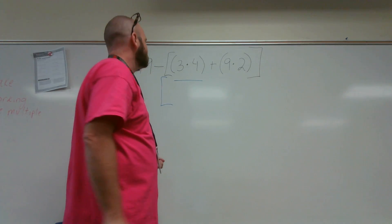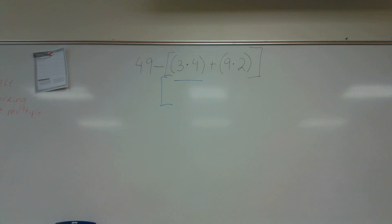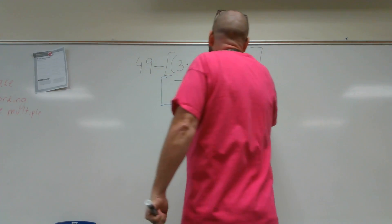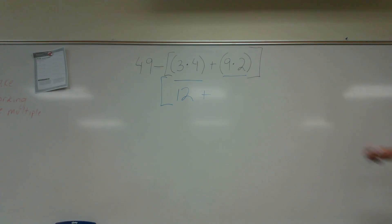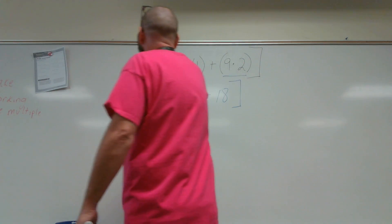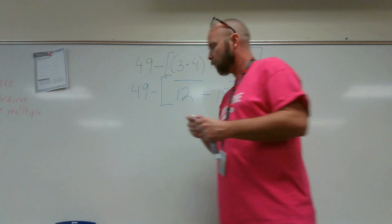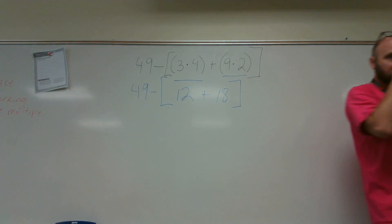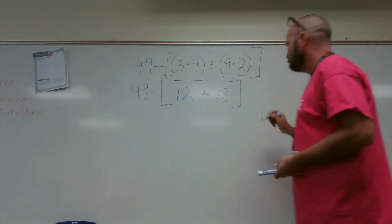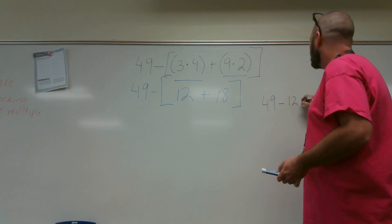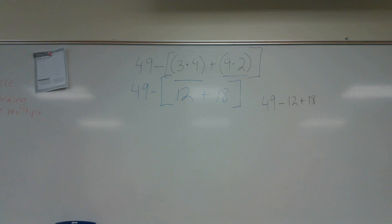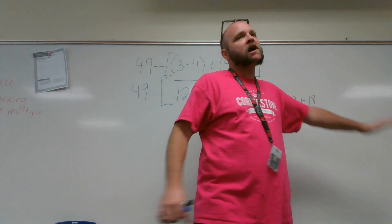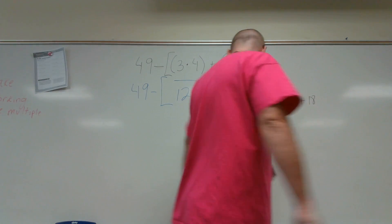Still going to stay inside my brackets. The product of 3 and 4 is what, Anton? 12. Then I need to find the product of 9 and 2. What is that, Anton? 18. What if I didn't put my brackets here — if I had 49 minus 12 plus 18, what would I do first? I would do 49 minus 12. Because addition and subtraction are the same step, and you work them from left to right.